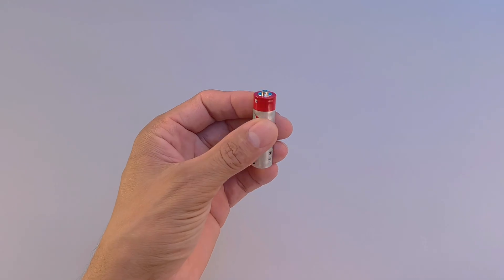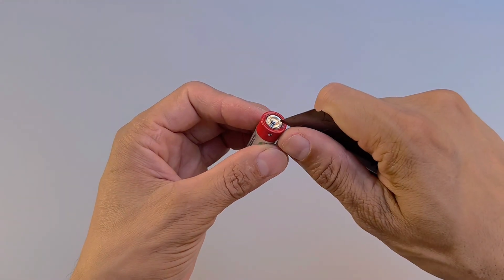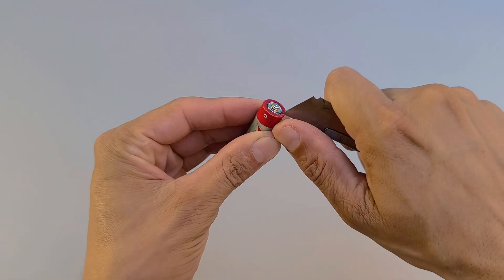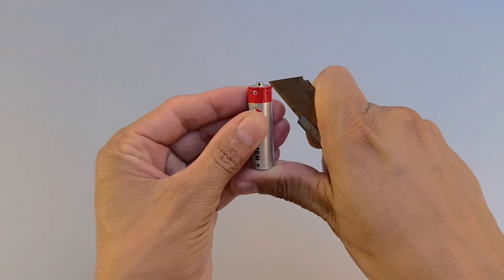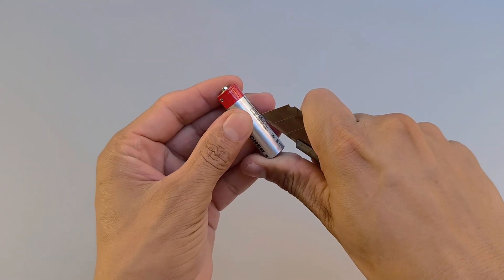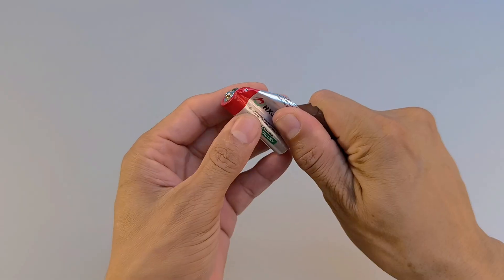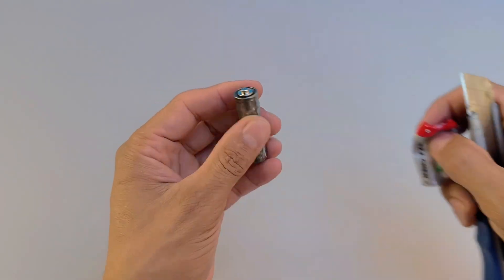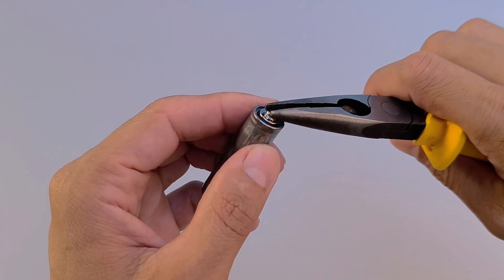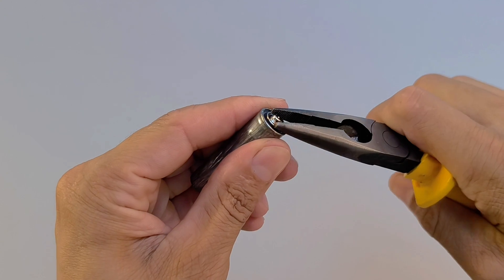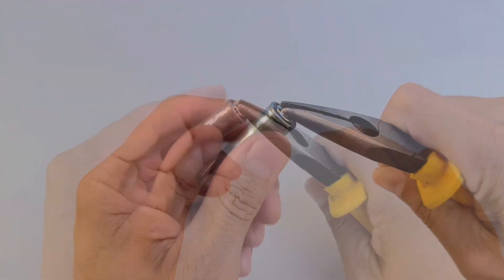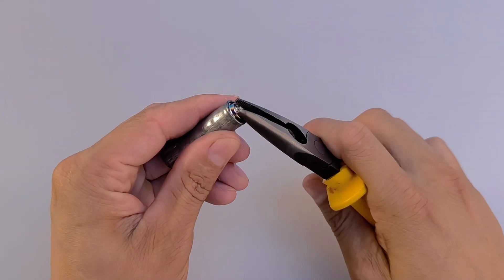For this, set aside one of the batteries and, with a utility knife, carefully remove the outer casing. Extra caution is needed in this step. Using the utility knife requires calm and precision, always prioritizing the safety of your hands. The goal is to release the positive terminal of the battery, which will serve as the base for our project.